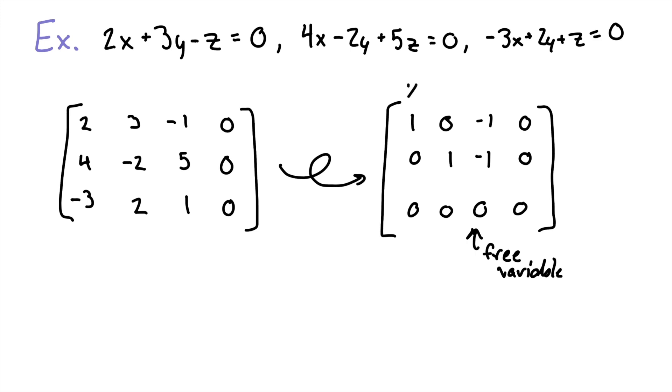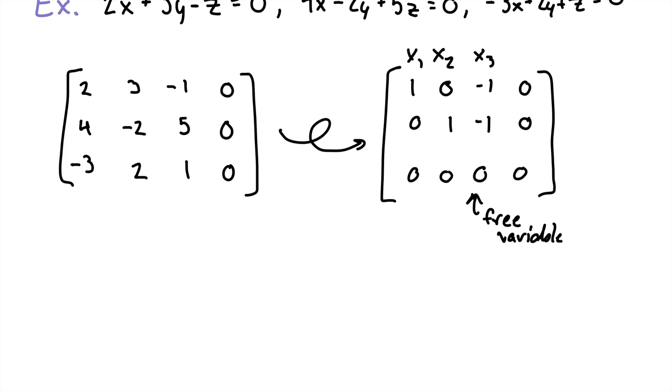And now we can call this column X1, second column X2, and the third column X3. So our free variable is going to be X3. And so we can write these equations as X1 plus 0X2 minus X3 equals 0.